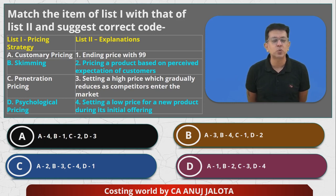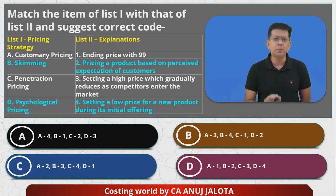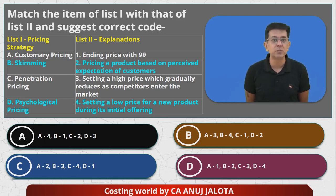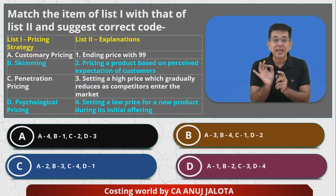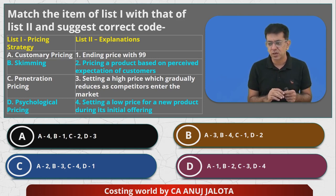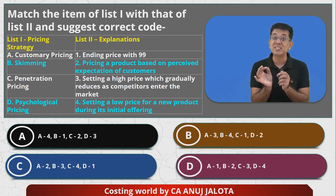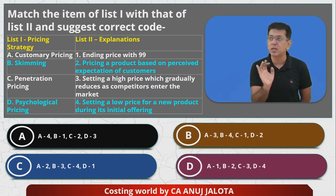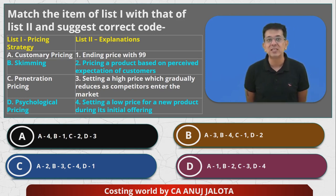Skimming policy means you launch the product at the highest possible price. Your product is good, innovative, with no competition yet — so launch at the highest possible price and as competition starts coming, you start reducing. You skim the market right at the beginning. Just like when we try to remove the cream from the milk — that is called skimming the milk. So you remove the cream, meaning you take the highest possible price right in the beginning.